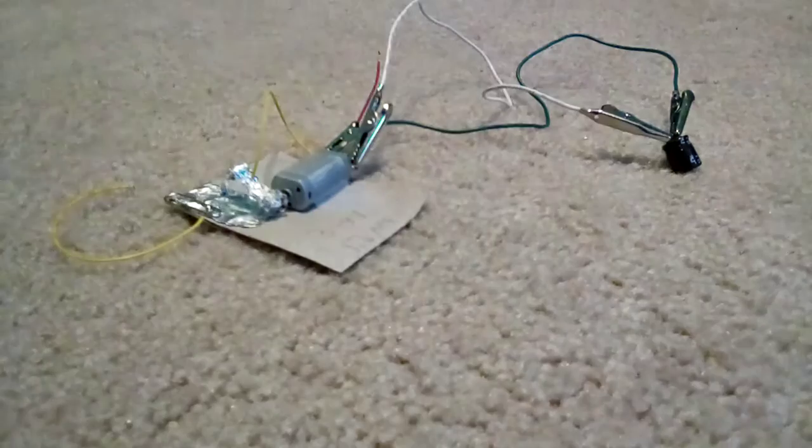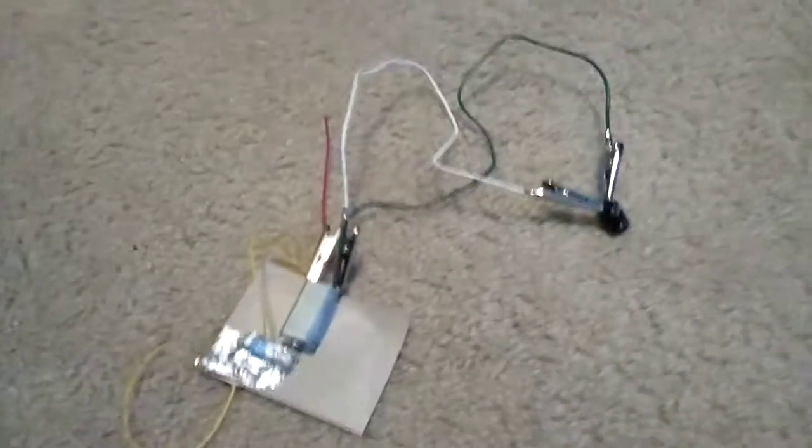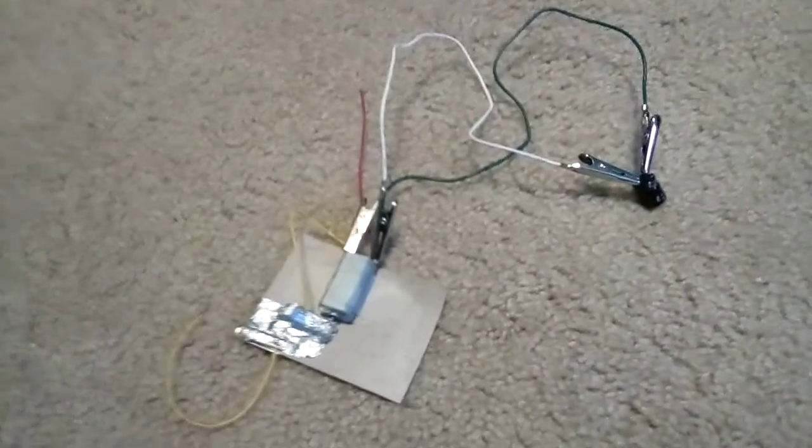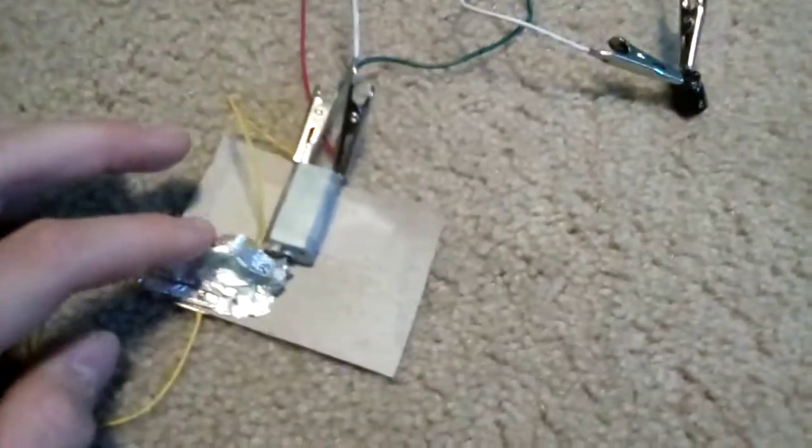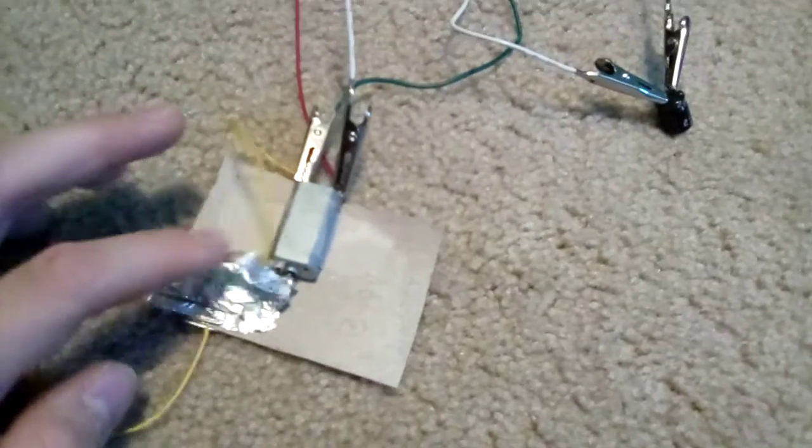The negative wire connects to the capacitor, the motor, and right here there's this little contact. This is what opens and closes so you can reset the switch. This is where the negative end goes.